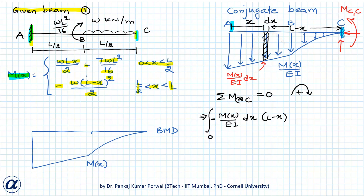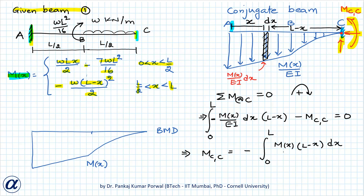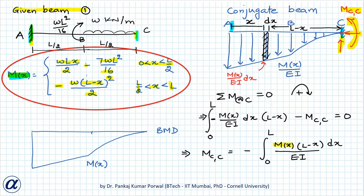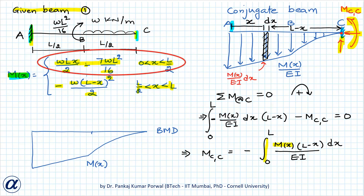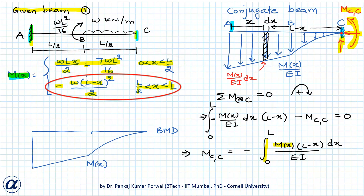The moment of this strip about C is (Mx/EI)·dx·(L − x), and it is anticlockwise, so it carries a negative sign. Writing sum of moments about C equals zero with clockwise positive: −∫₀ᴸ Mx·(L − x)/EI dx − Mcc = 0, giving Mcc = −∫₀ᴸ Mx·(L − x)/EI dx. Since Mx has different expressions over [0, L/2] and [L/2, L], the integral is split into two parts accordingly.